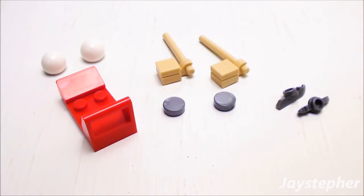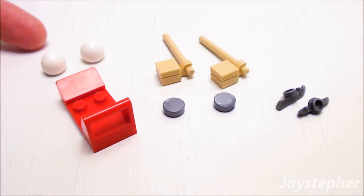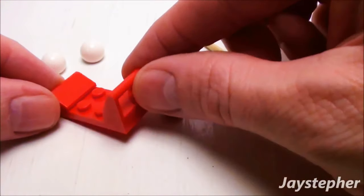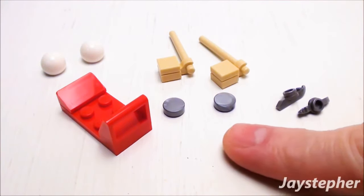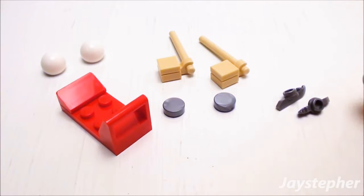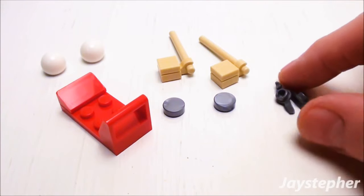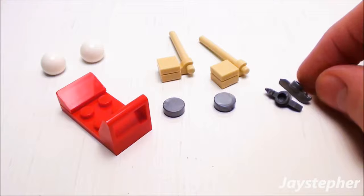Moving on to the accessories. We have two round spheres that are used for snowballs, a little brick-built sleigh, two hockey sticks, two round tiles for pucks, and an extra set of ice skates.